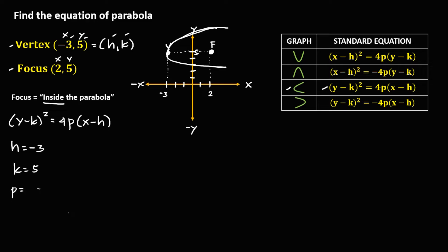To solve for p, p is the distance from the vertex to the focus. We use the counting method — you start counting on the next point: 1, 2, 3, 4, 5. Therefore p is equal to 5.